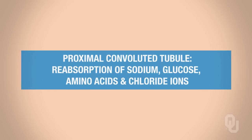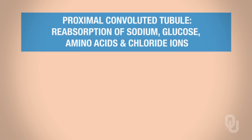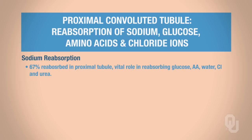Sodium reabsorption is vital. This gives you an idea of how much sodium we're going to be reabsorbing throughout the nephron. Most sodium gets reabsorbed in the proximal convoluted tubule, and it plays a really vital role in being able to reabsorb glucose, amino acids, urea, water, and chloride.